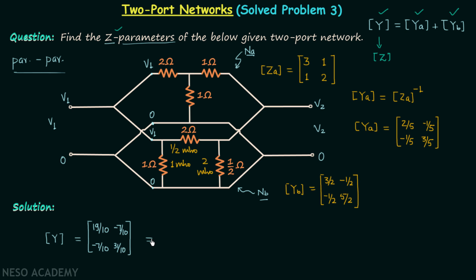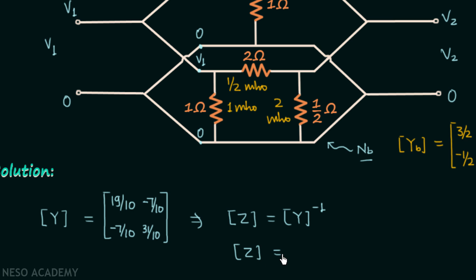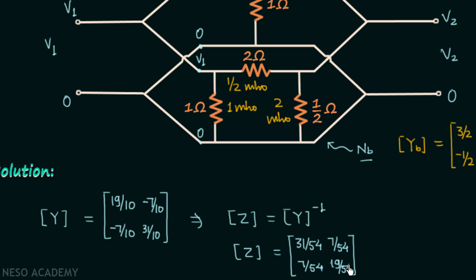From matrix Y we obtain the Z parameters matrix by taking its inverse. The Z parameters matrix is: Z11 = 31/54, Z12 = 7/54, Z21 = 7/54, and Z22 = 19/54.